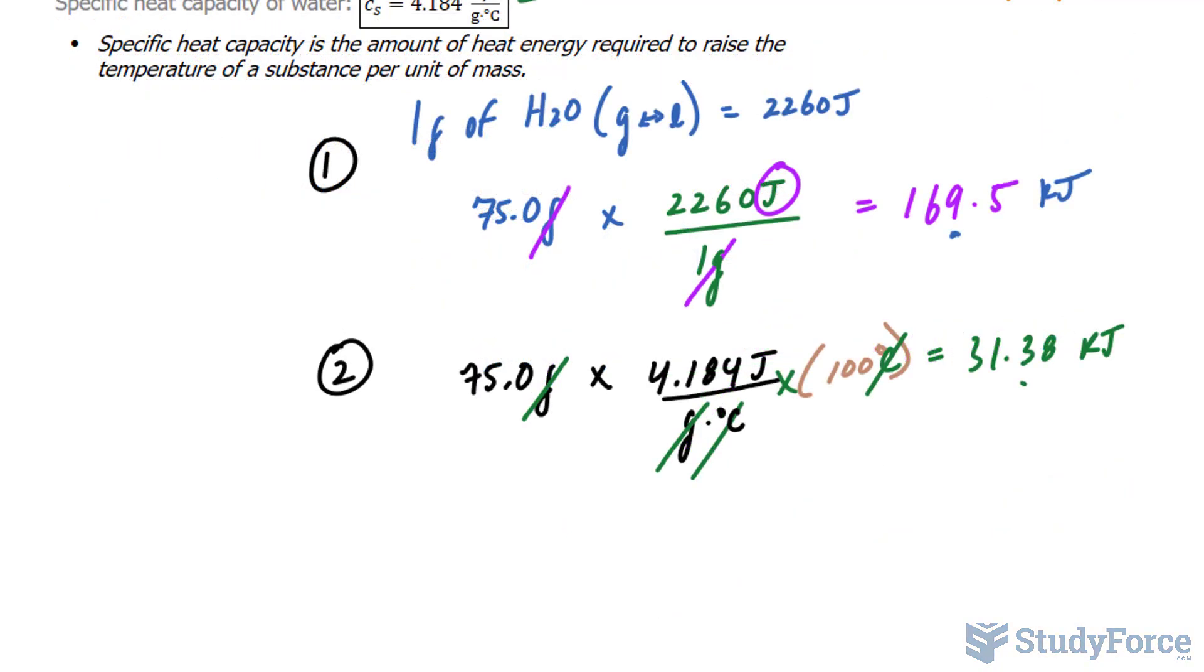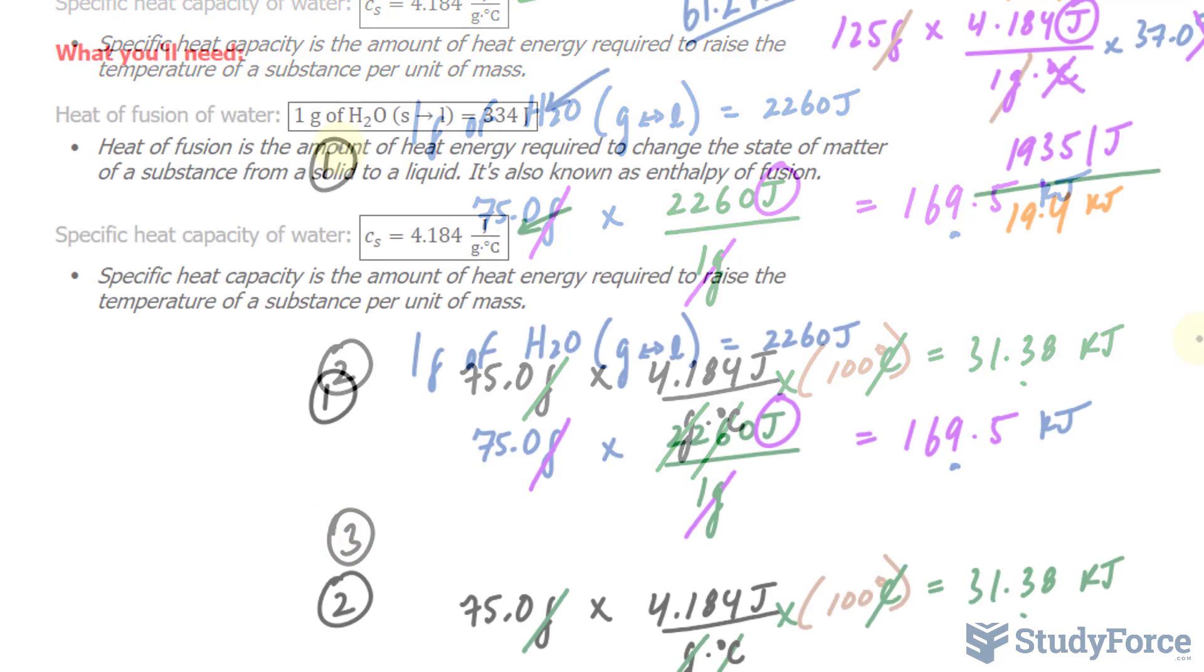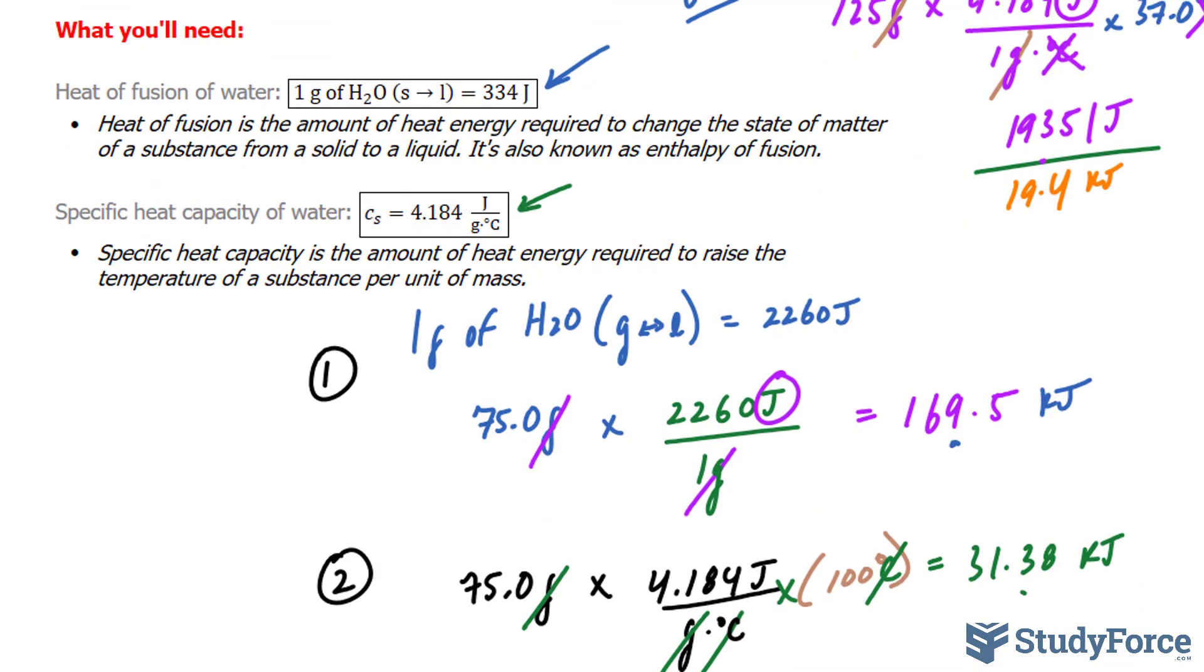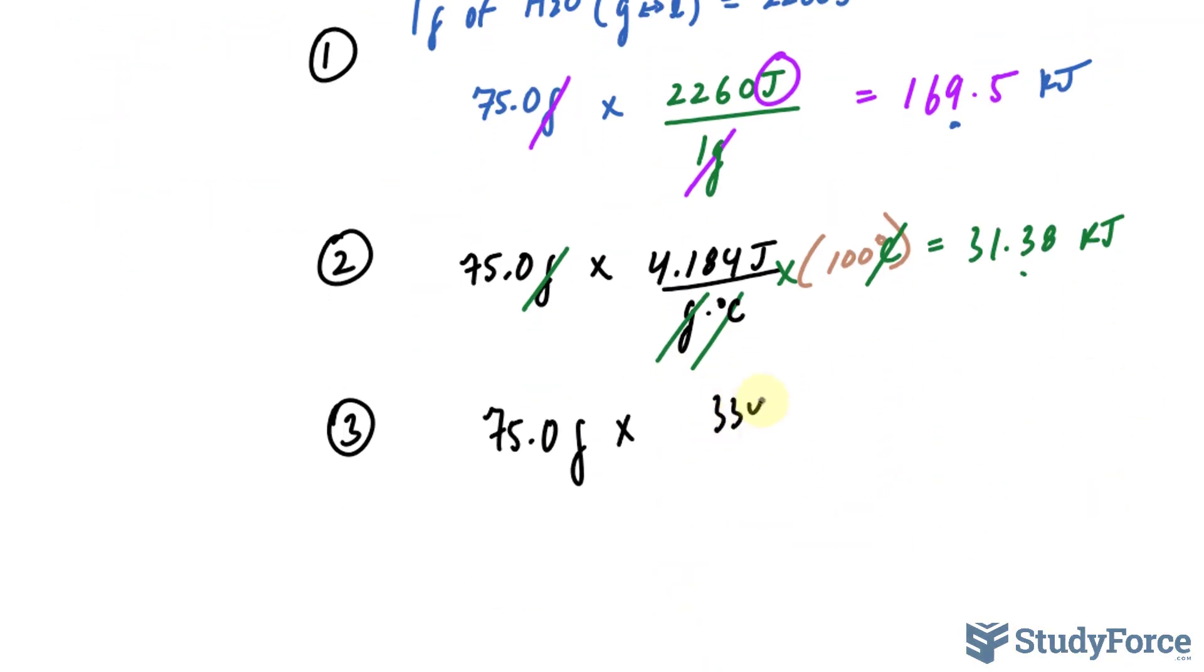And our third calculation will be the amount of energy to go from liquid state to solid state. We'll be using this conversion ratio. We have 75.0 grams times that conversion ratio, 334 joules at the top per 1 gram of water at the bottom.